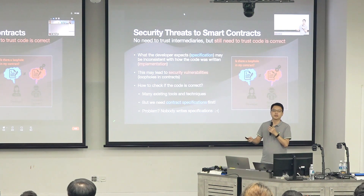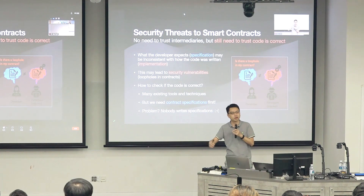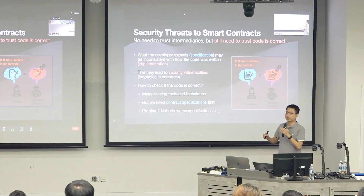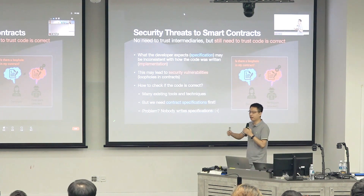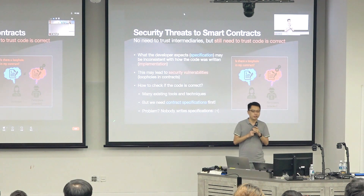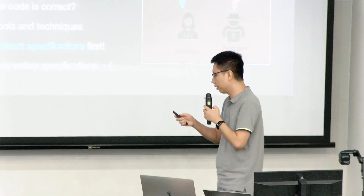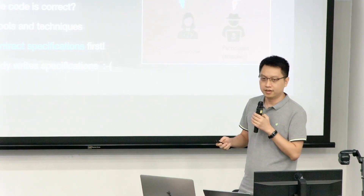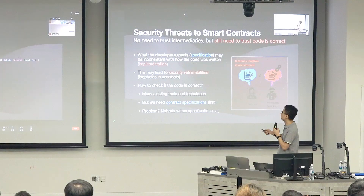Checking whether code is correct is a very classic and hard problem — in general it's undecidable — but in practice there are many existing tools and techniques to do this checking. However, for any of these tools to work, we must first have the contract specification written. The problem is that in practice nobody writes specifications: it's too hard. Developers are already writing code; asking them to also write specifications is too much.